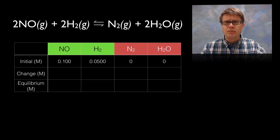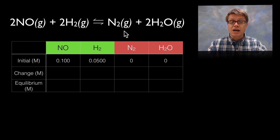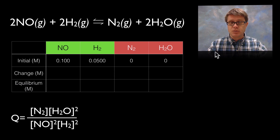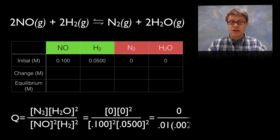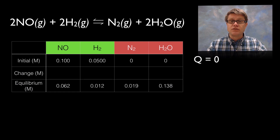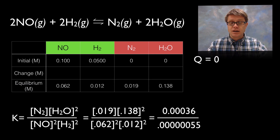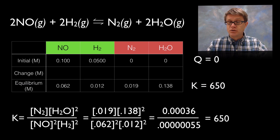Now let's look at an ICE table — ICE stands for Initial concentration, Change, and Equilibrium concentrations. Given a reversible reaction equation you should be able to calculate the Q value. The Q expression here is water raised to the second power times nitrogen, divided by the reactants. Since both product values are initially 0, plugging those in gives Q = 0. That's our initial state. Given molarities at equilibrium you can calculate K by plugging those values into the same expression, giving K ≈ 650 (two significant digits). Since Q is less than K, the reaction moves to the right.